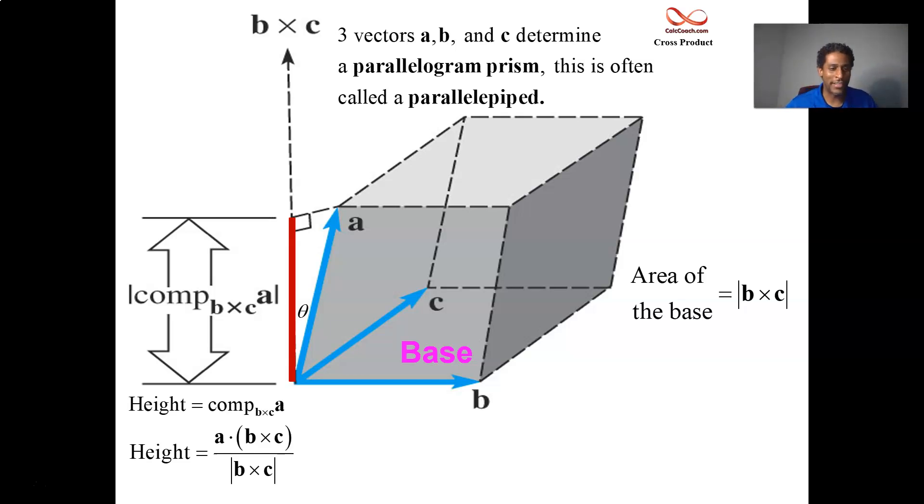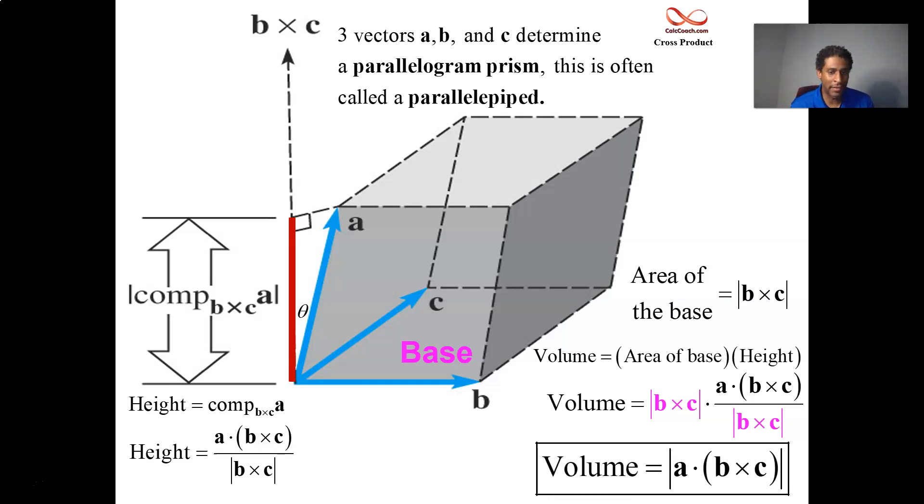And so take these two calculations and put them together to get the volume. We multiply the area of the base times the height, put these two guys together and we get some nice cancellation. And what comes out is a dot product, which has the potential to be negative. And so those bars around it are absolute value bars.